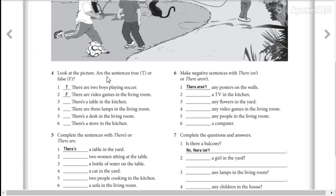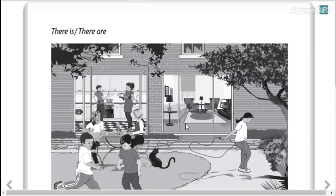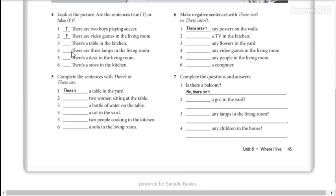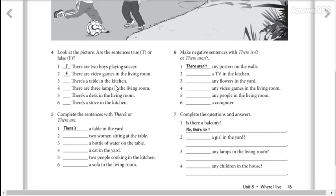Number 4, look at the picture. Are the sentences true or false? There's a table in the kitchen. Look at the kitchen, there is a table. No, entonces ponemos false. So according to the picture, you are going to write true or false. Todas estas palabras ya las conocen.